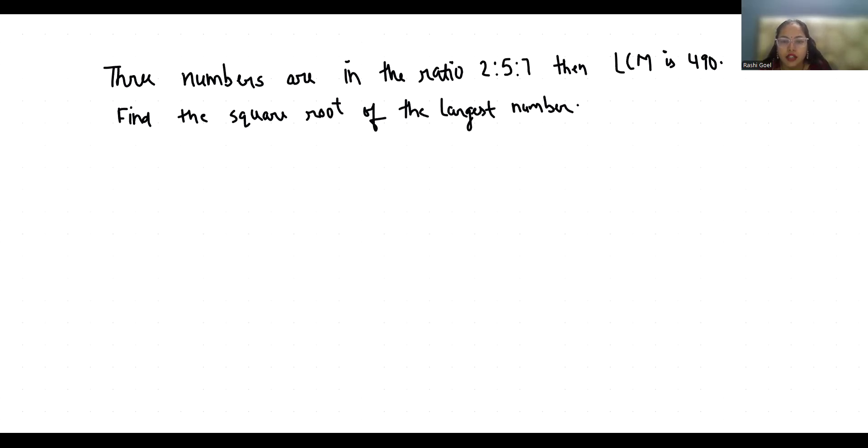Three numbers are in the ratio 2:5:7. Their LCM is 490 and we have to find the square root of the largest number.